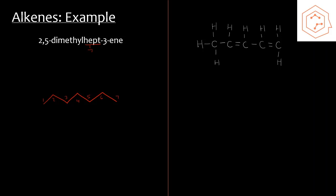Next, we indicate where the double bond is. The '-ene' ending tells us it's a double bond, and the number three tells us it's at the third position — so right between carbons three and four we draw another line to indicate the double bond. We also add the substituent groups: two methyl groups at positions two and five. One straight line at carbon two for the first methyl group, and a second straight line at carbon five — and that concludes the structure for 2,5-dimethylhept-3-ene.